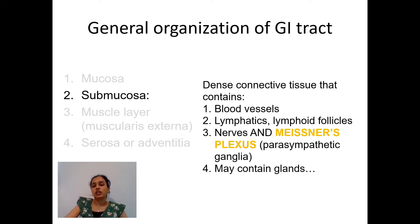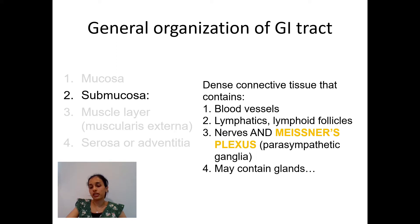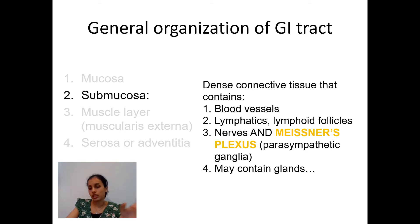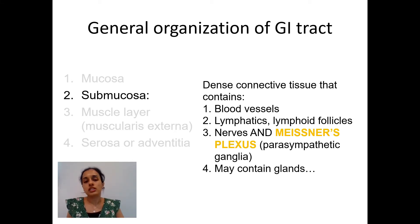The submucosa consists of dense connective tissue containing blood vessels, lymphatics, and sometimes lymphoid nodules. It also contains nerves and nerve plexuses, which are parasympathetic in nature — specifically parasympathetic ganglia called Meissner's plexus, also known as submucosal nerve plexus. At certain parts like the duodenum and esophagus, the submucosa also contains submucosal glands.